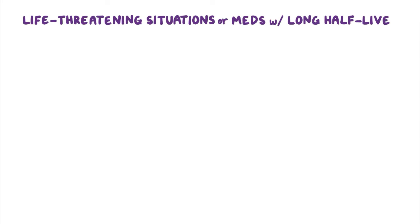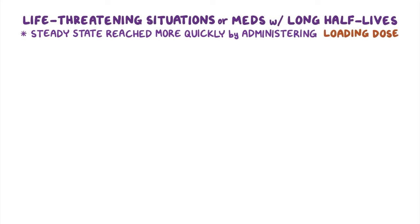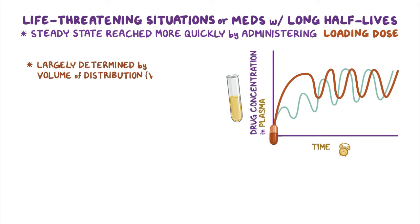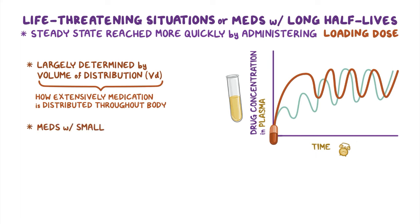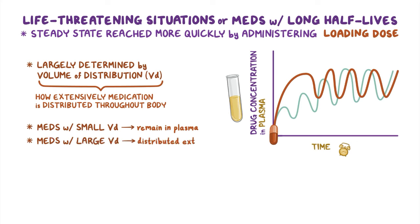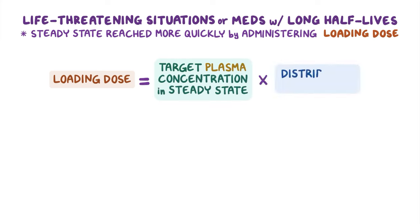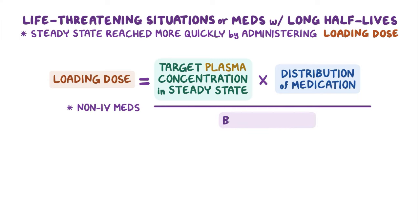In some cases, like in life-threatening situations or with medications that have long half-lives, the steady state can be reached more quickly by administering an initial loading dose — a large dose given at the beginning of a treatment course to rapidly reach the peak plasma concentration. The loading dose is largely determined by the volume of distribution, or VD, which represents how extensively a medication is distributed throughout the body. Medications with a small VD remain mainly in the plasma, whereas those with a large VD are distributed more extensively, requiring larger doses to achieve the desired plasma concentration. The loading dose is calculated by multiplying the target plasma concentration at steady state by the volume of distribution, and for non-IV medications, this is divided by the bioavailability.